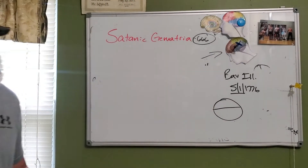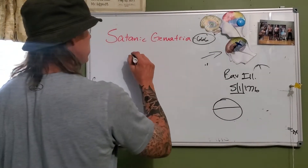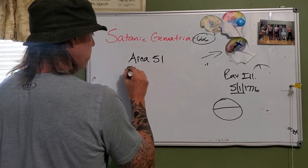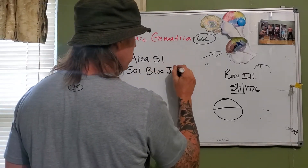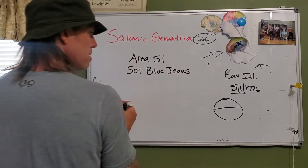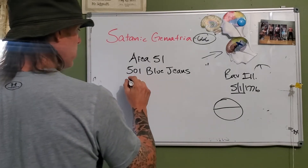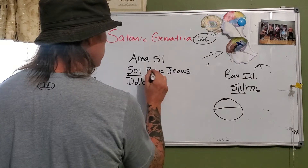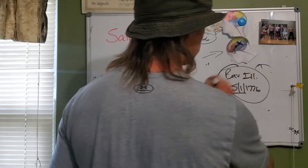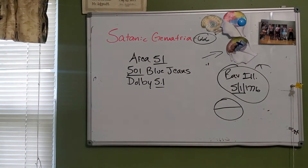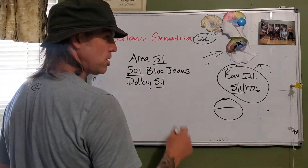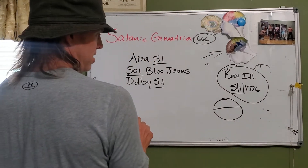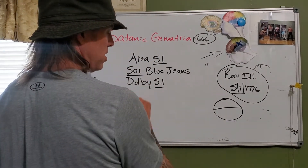How we can show you it's real: what's that fake alien thing called? Area 51. What blue jeans do you wear? 501. What's on your TV? Dolby 5.1. It all goes back to the Illuminati. And when you graduate — grade, indoctrination — graduation is indoctrination.